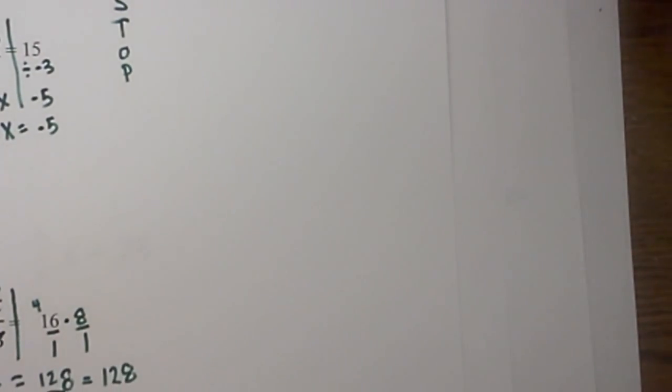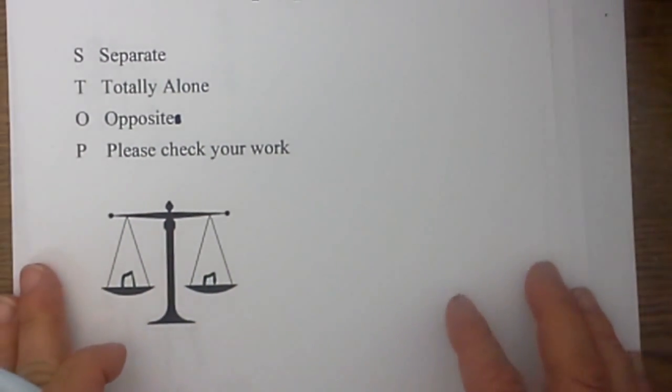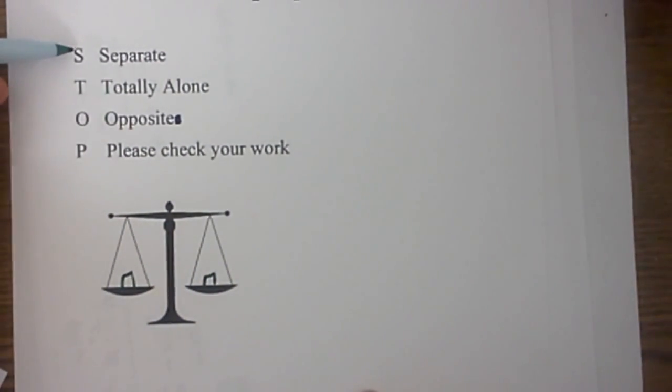Remember to use the stop method in order to solve these. Just a little mnemonic to help you understand the steps. You separate. You work on getting the variable totally alone. You complete the opposite operation. If you have subtraction you will add. If you have multiplication you will divide. Then at the very end please check your work to make sure you have not made a mistake.